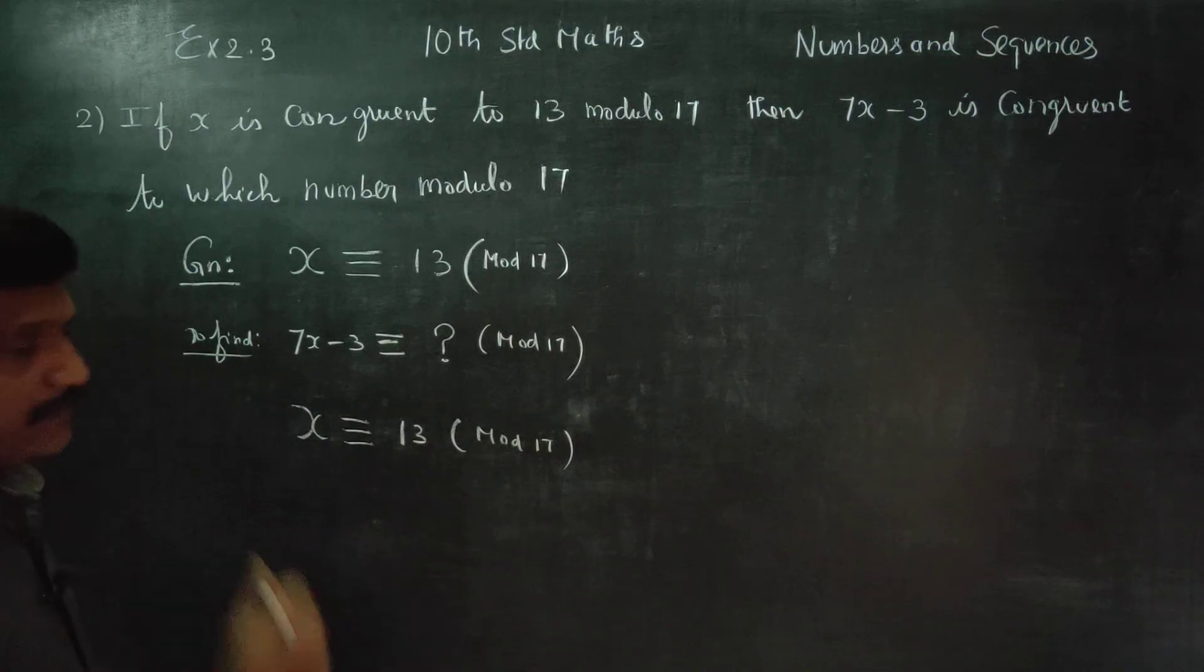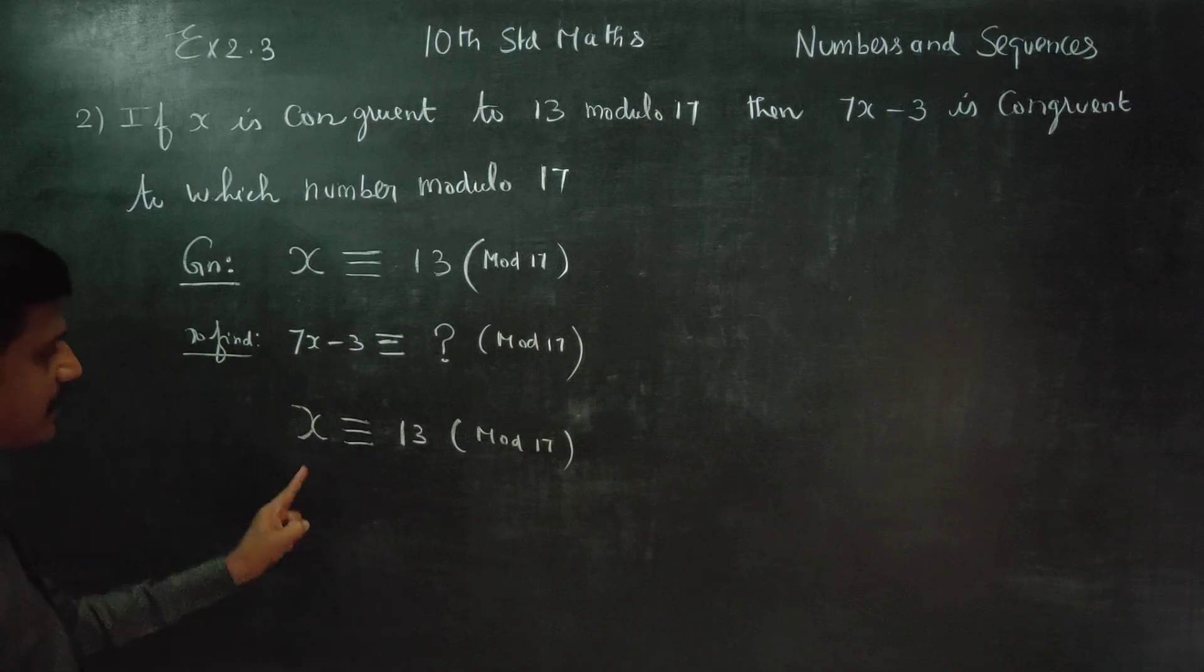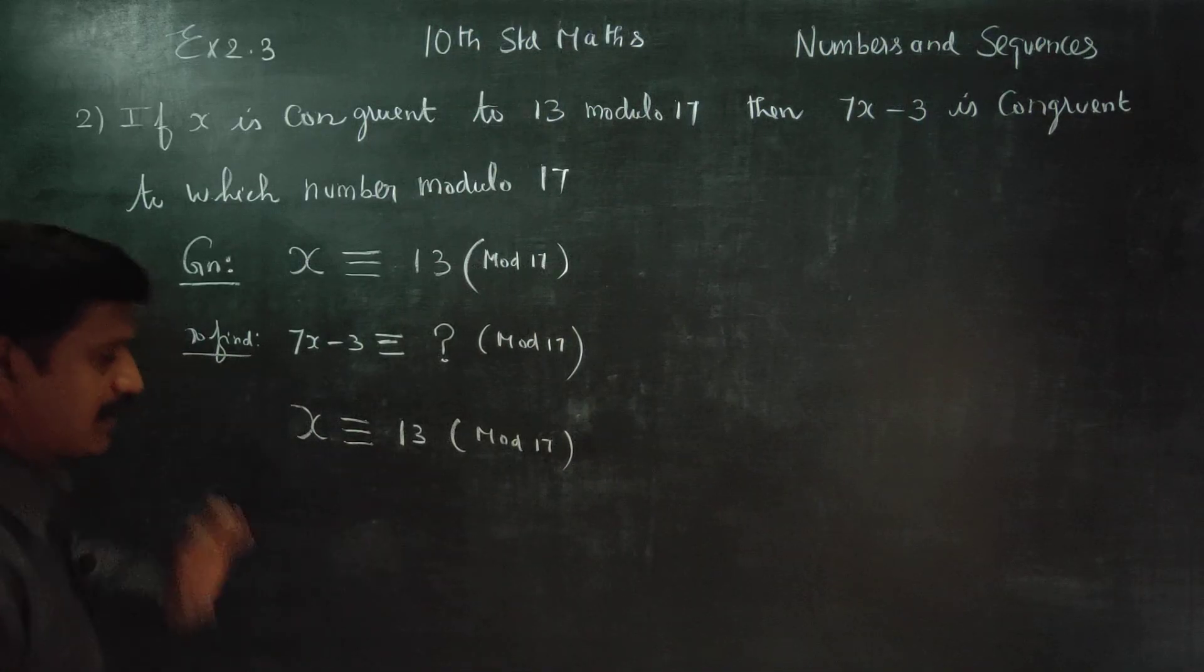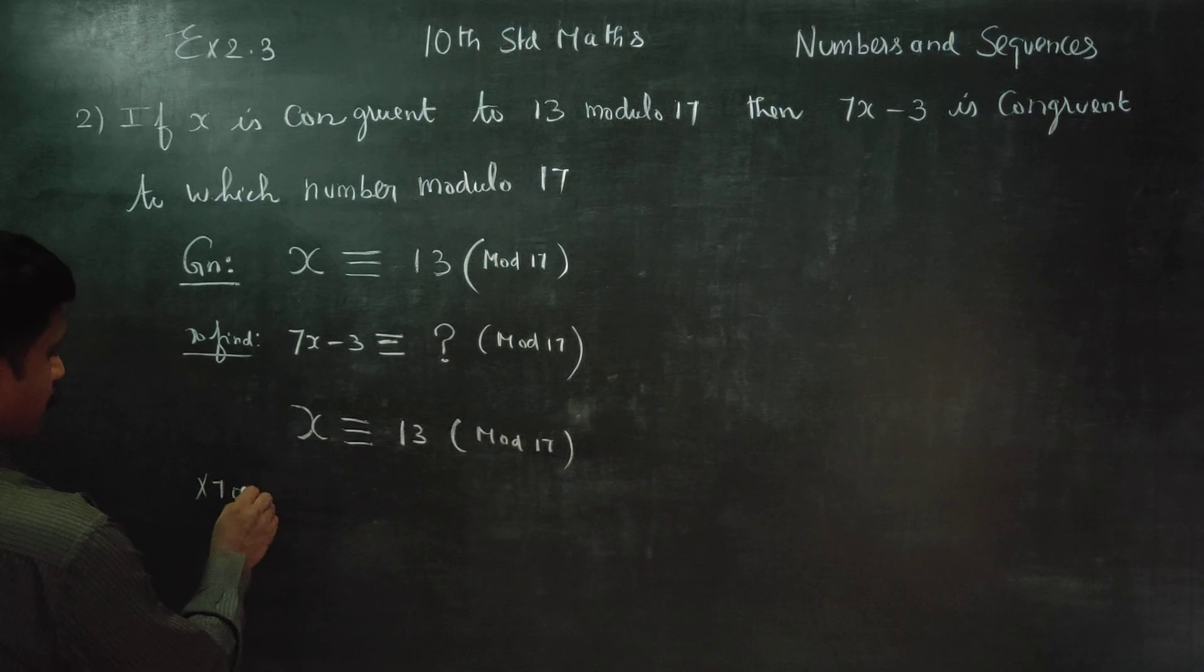x is congruent to 13 modulo 17. I am going to multiply by 7 on both sides.